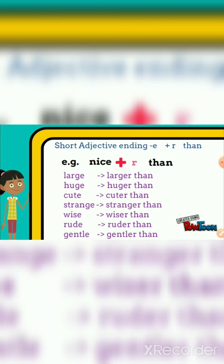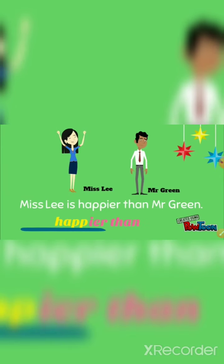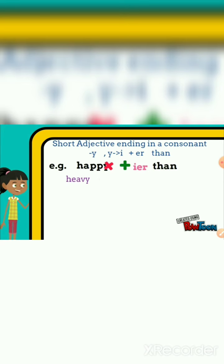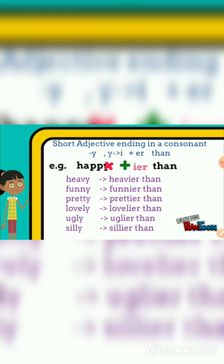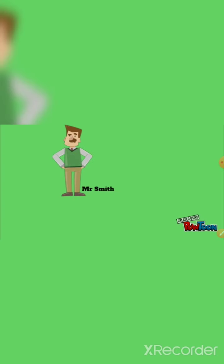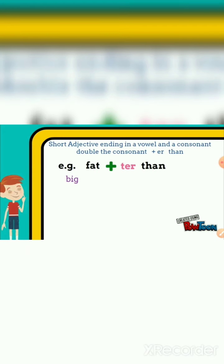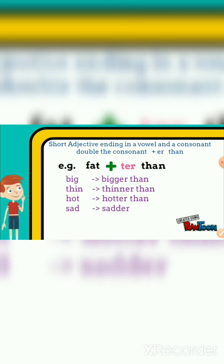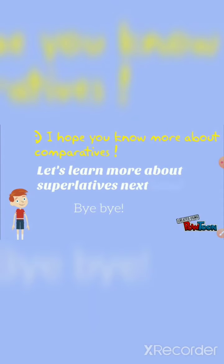Miss Lee is happier than Mr. Green. For short adjectives ending in a consonant plus 'y', we remove the 'y' and add 'i-e-r' plus 'than.' Also, Mr. Smith is fatter than Mr. Green. For short adjectives ending in a vowel and a consonant, we double the consonant and add 'er' plus 'than.'